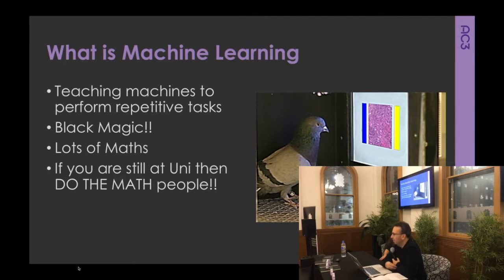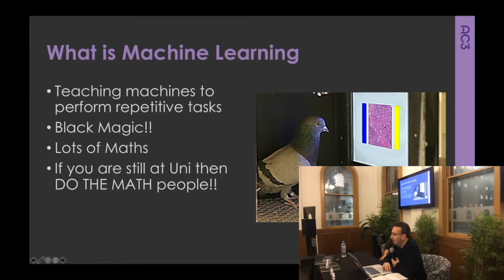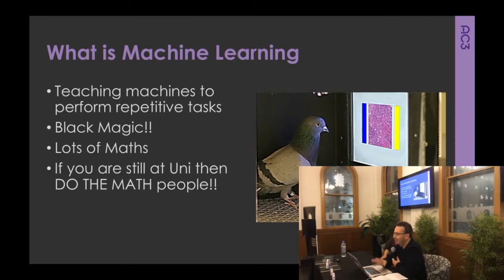Machine learning is about teaching machines to perform repetitive tasks. This picture of a pigeon is actually pretty cool — a bunch of scientists decided to teach some pigeons how to detect cancer. This pigeon looks at a cancer cell and decides whether it's cancer or not. A single pigeon can detect cancer with 84% accuracy. Eight pigeons can detect cancer with 98% accuracy, which is better than most radiologists — and pigeons have tiny, tiny little brains.